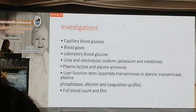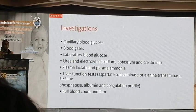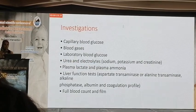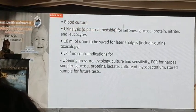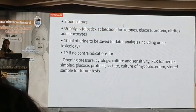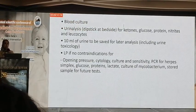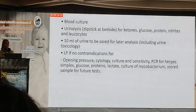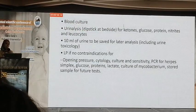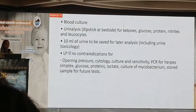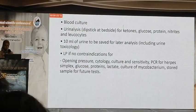Investigations that should be done at the emergency unit include capillary blood glucose, blood gases, laboratory blood glucose, urea and electrolytes, plasma lactate and plasma ammonia, liver function tests, full blood count, blood culture, urine analysis, and lumbar puncture if there is no contraindication. For lumbar puncture, assess the opening pressure, perform cytology, culture and sensitivity, PCR if suspecting herpetic encephalitis, and store CSF samples for future tests.